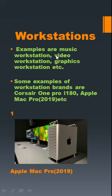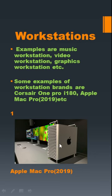Examples are music workstation, video workstation, graphics workstation, etc. Most times these workstations are dedicated — some are dedicated just for music production, some for video production, and so forth. A notable example of a brand of workstation is the Apple Mac Pro 2019. This is the system unit; although it looks like a desktop computer, it actually has higher memory and processing units than the desktop computer. In the rank of microcomputers, the workstation comes first.